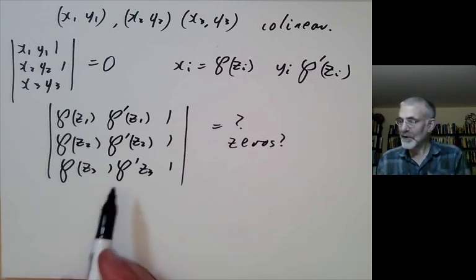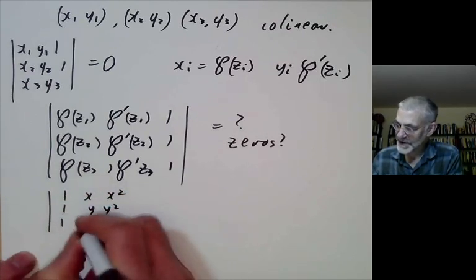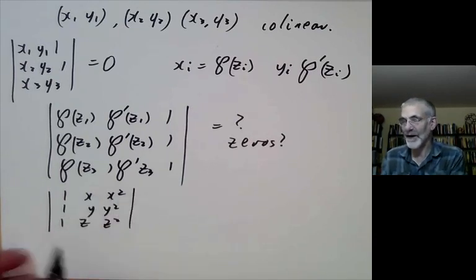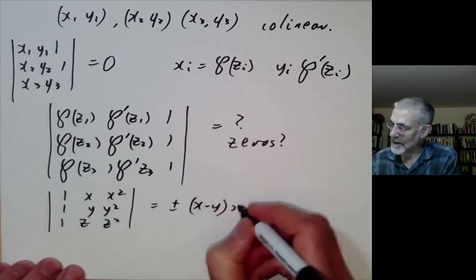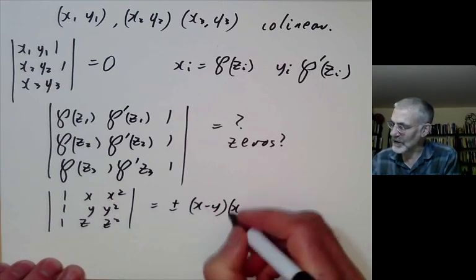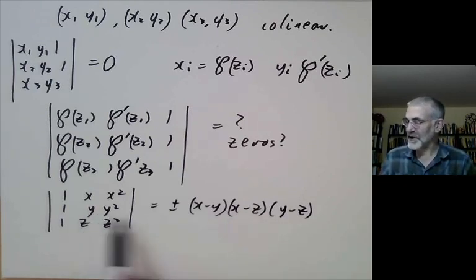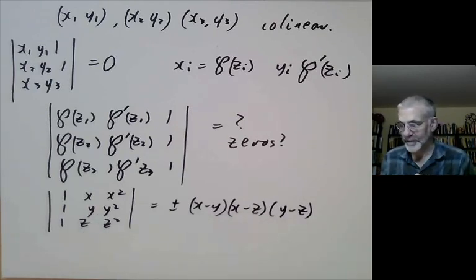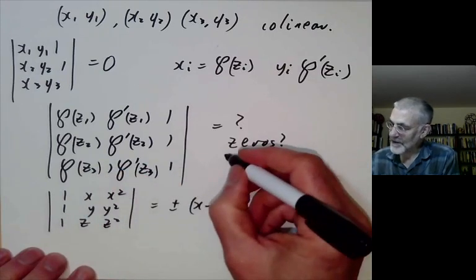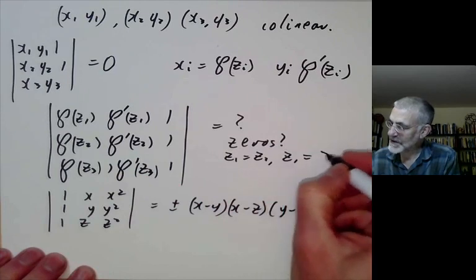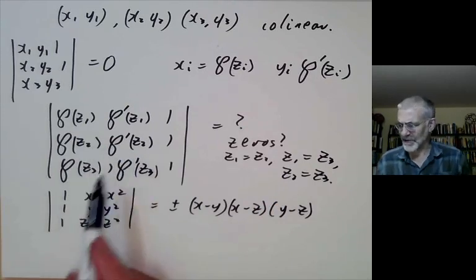This determinant vaguely reminds us of the Vandermonde determinant — like (1, x, x²; 1, y, y²; 1, z, z²) — which is easy to evaluate because it's divisible by (x-y), (x-z), and (y-z), and both sides are degree 3. We can do the same trick here: this determinant is zero if z1=z2, z1=z3, or z2=z3. We want to know if it has any other zeros. It turns out it does.